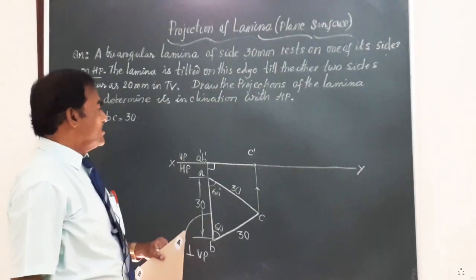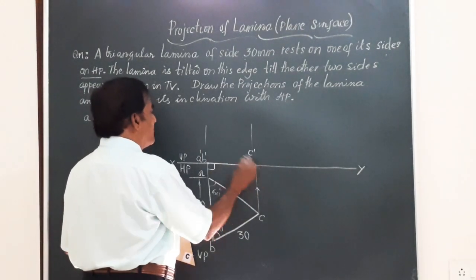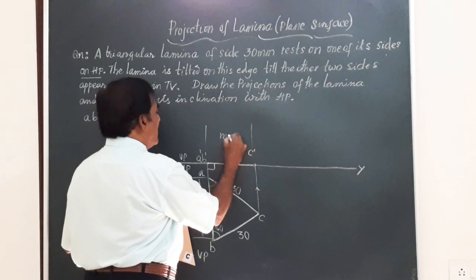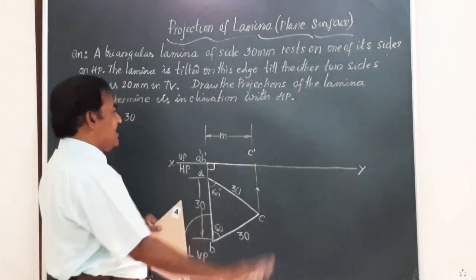That I have shown here, friends. So let me call this distance between AB and C or the front view of the lamina as some length M. We call that distance as M.